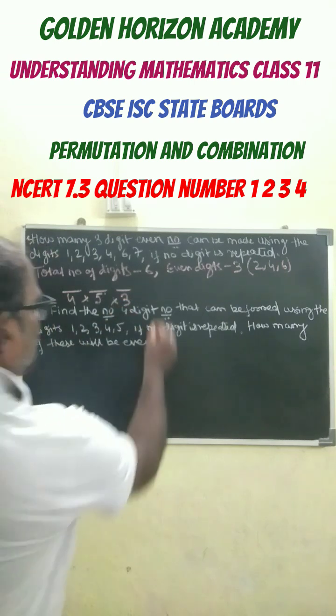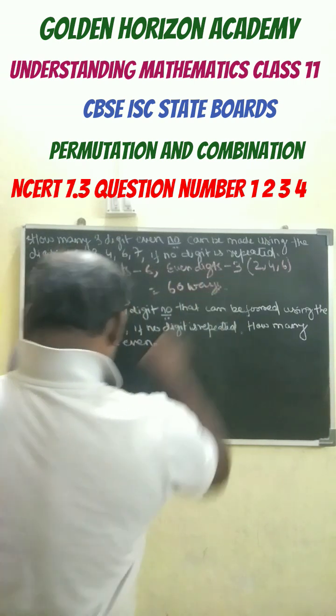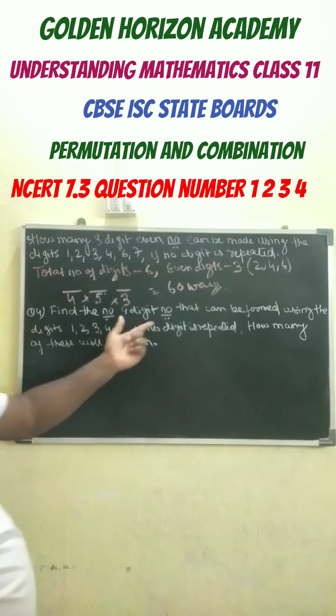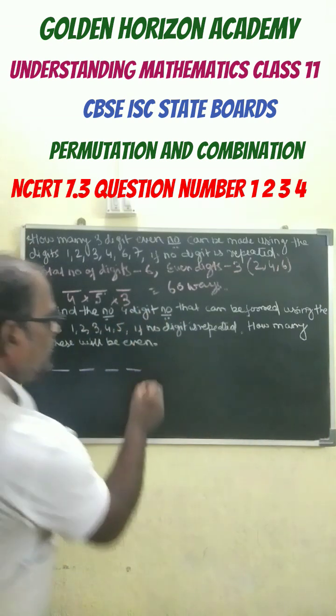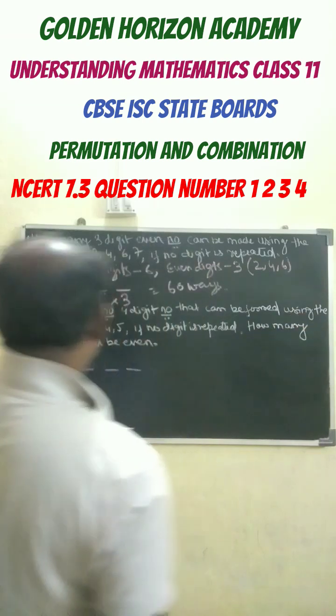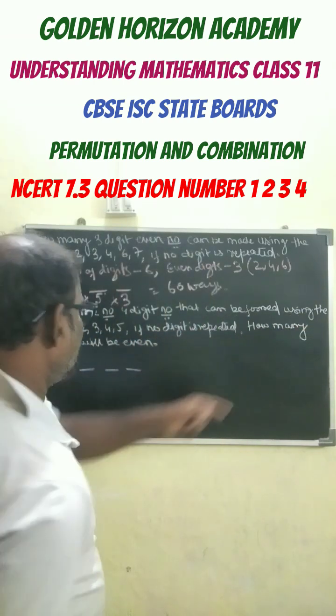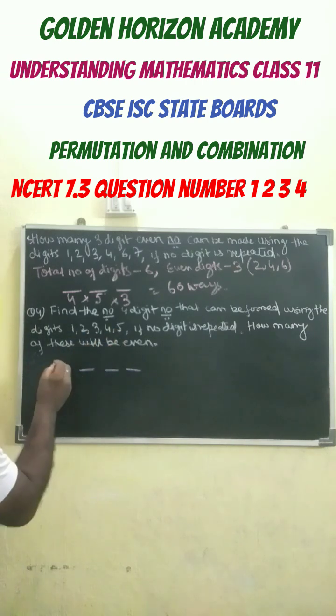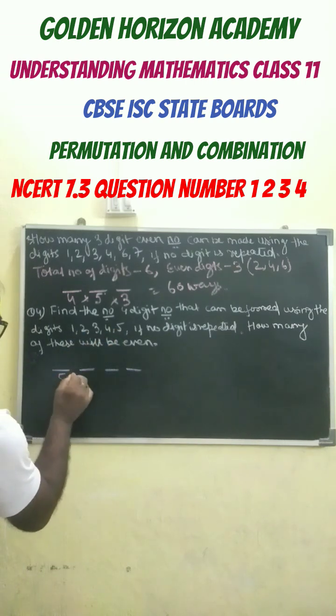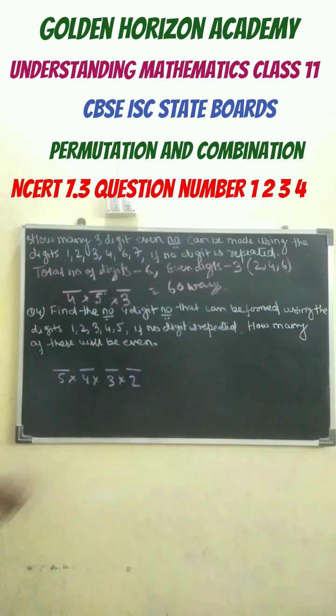Next question: find the number of four-digit numbers that can be formed using digits if no digit is repeated. The number of digits is one, two, three, four, five - five digits. So this can be filled in five ways, this in four ways, this in three ways, and this place in two ways. Our answer equals 120.